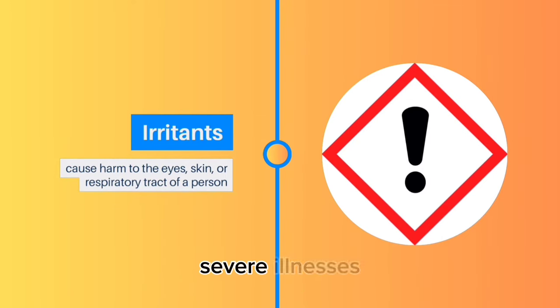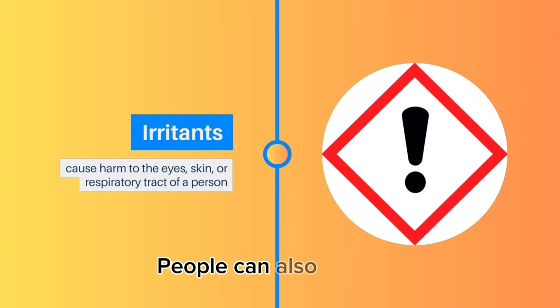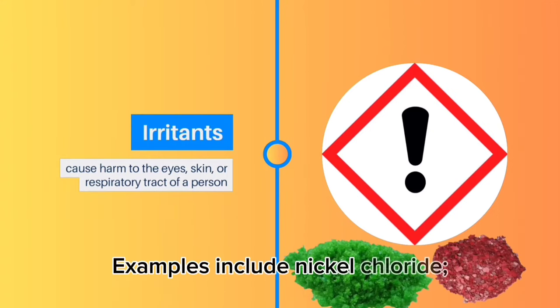Irritants are mostly short-term severe illnesses but can also have long-lasting side effects in some people. People can also have an allergic reaction to some of these chemical materials with long-lasting health impacts or even be fatal. Examples include nickel chloride and chromic acid.